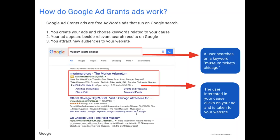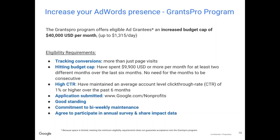$10,000 a month might seem like a lot, but for any of you that use the program, you might know that it tends to go very quickly. It's often hard — especially because there are limitations on what you can pay on a cost per click — to make the most of that money. I also wanted to make you aware that there is a program called Grants Pro where, instead of $10,000 a month, you can actually apply to have your budget increased to $40,000 a month. I wanted to list the eligibility requirements. There's a link to the application at google.com/nonprofits. There are some stipulations, but in case any of you are running up against that limit and really maximizing the existing $10,000 a month, there's a potential to increase that.